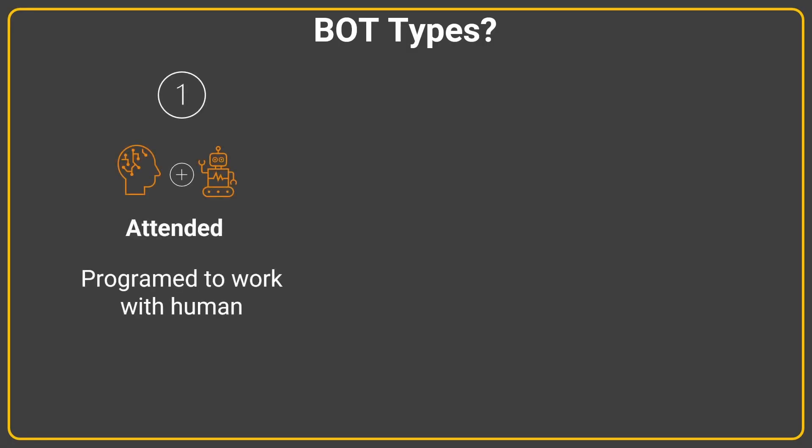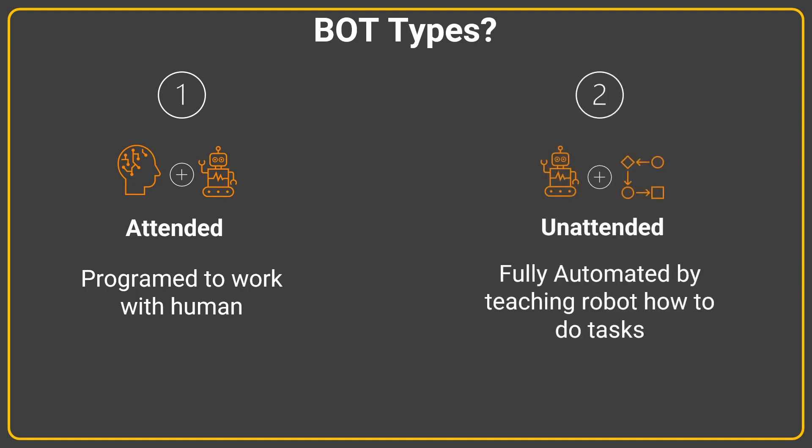There are two types of bots: attended bots and unattended bots. Attended bots work with humans — generally in an approval process where a human wants to see things done and approve them to ensure correctness. A bot and a human working in tandem to make a task successful is called an attended bot. An unattended bot is fully automated — once you teach the robot how to do a task and accurately test it, it just keeps on performing. It is often used for straight-through processes where no human is needed in between, whereas attended bots require a human in the loop.